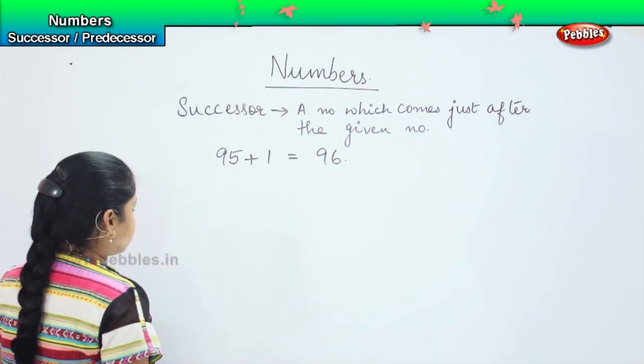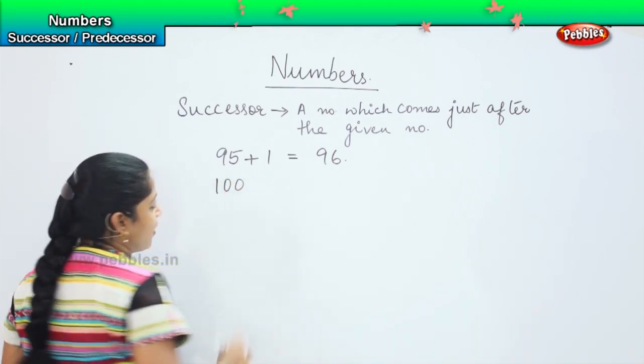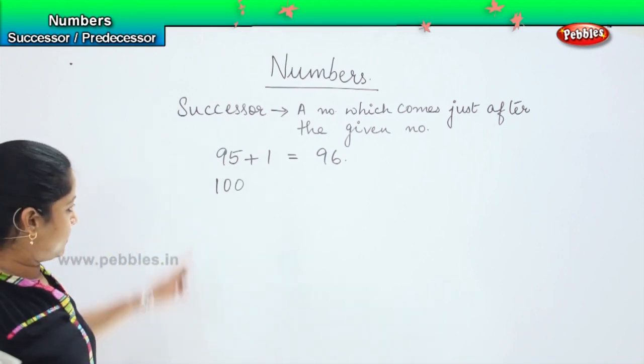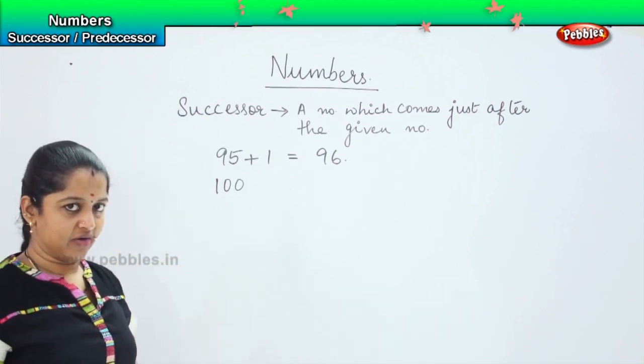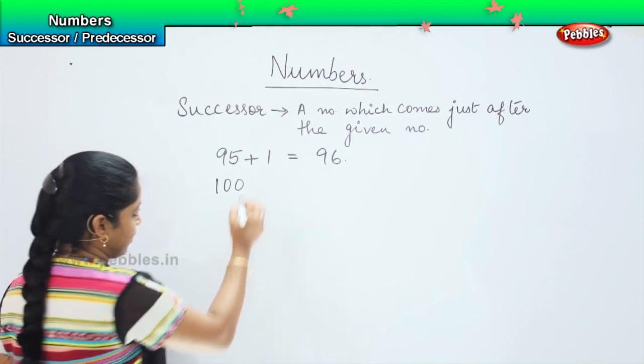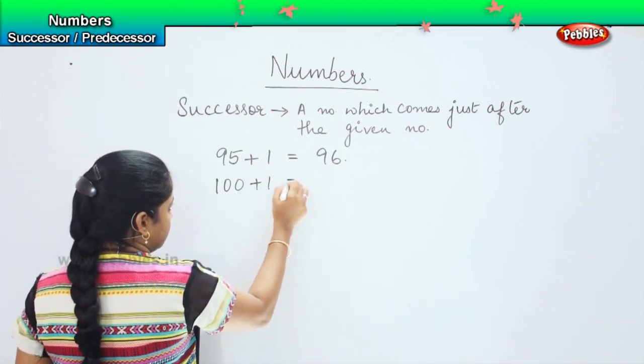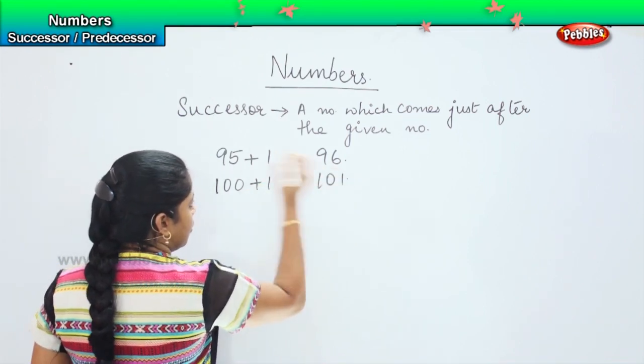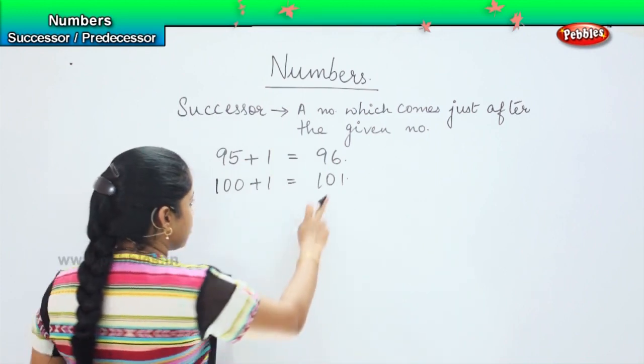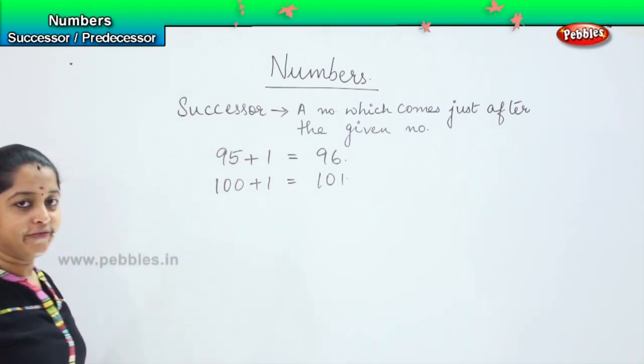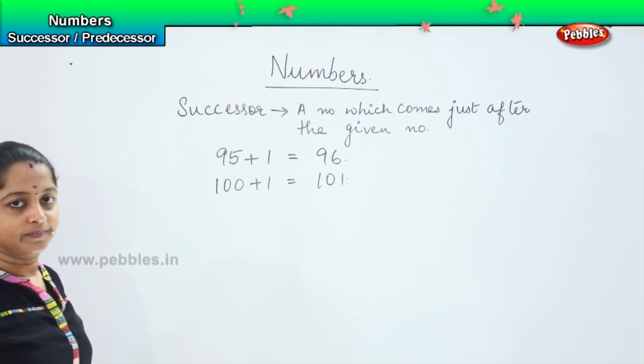Similarly, if I say what is the successor of 100? What is the number which comes just after 100? You need to add 1, so it becomes 101. So 101 is the successor of 100.